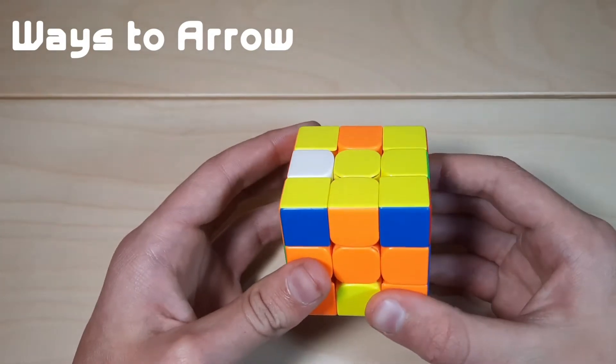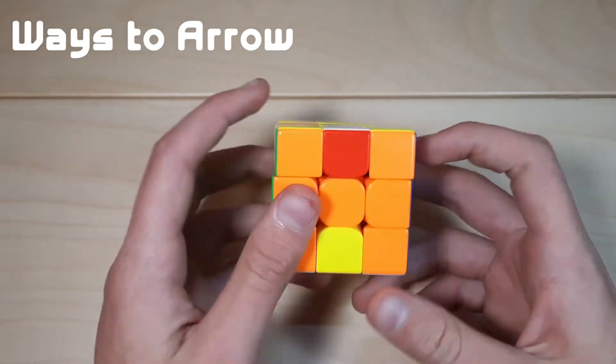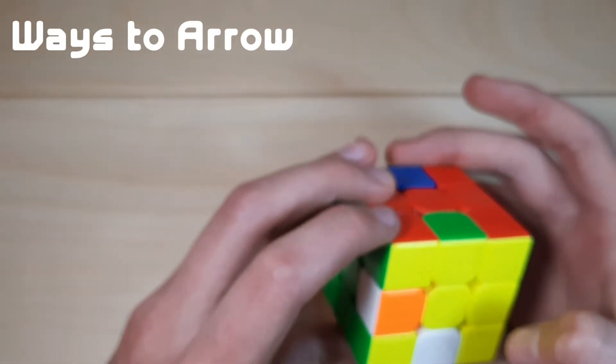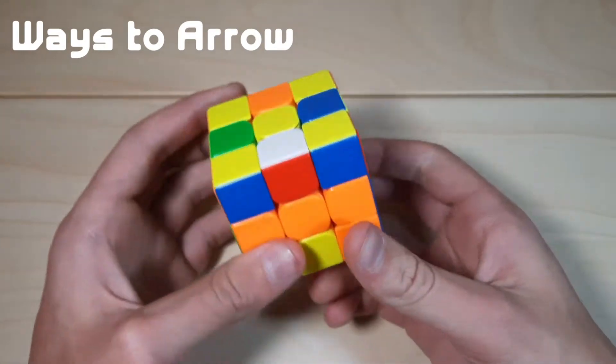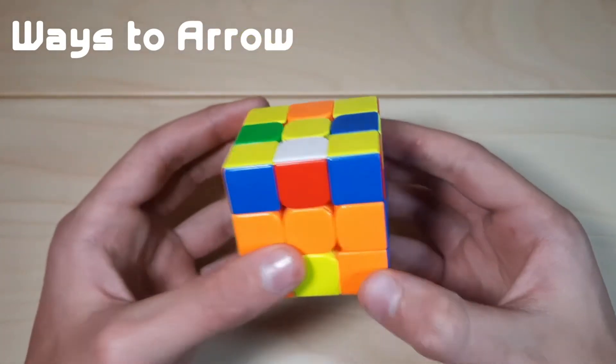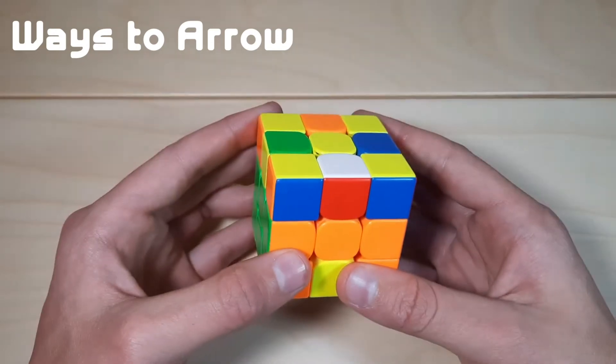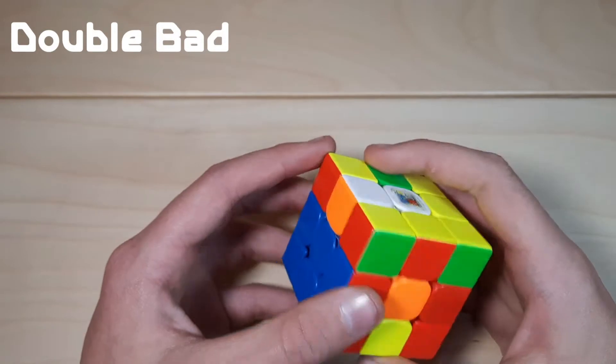The final way that we set up to the arrow case is with our U layer bad edge on the side, and we insert it into the D layer good edge position. So here, we're going to do that like this, and that also gives us an arrow case. Those are the three different ways that we're going to be setting up to good arrows to solve ELR. In this first section, both of the LR edges are bad edges.